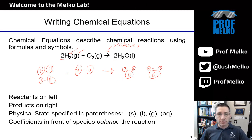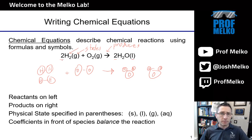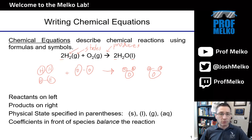Notice also we have these physical states — gas phase on the left, liquid phase on the right — denoted in parentheses: solid, liquid, gas, aqueous. The coefficients out front tell us how many of each molecule are reacting or are produced. And importantly, those coefficients are what we use to balance the chemical reaction. We never change the subscripts, just the coefficients.